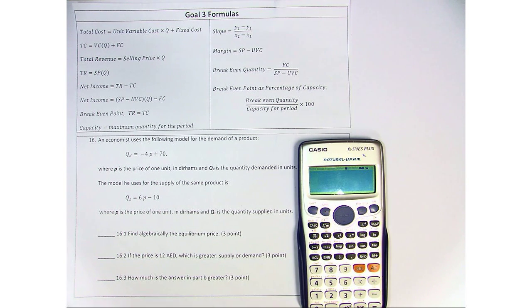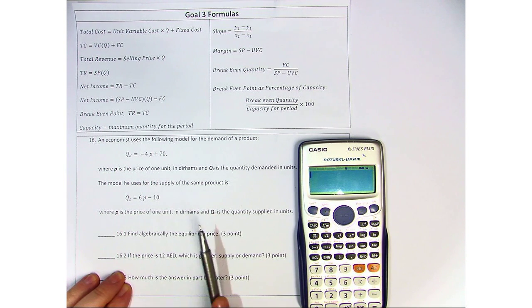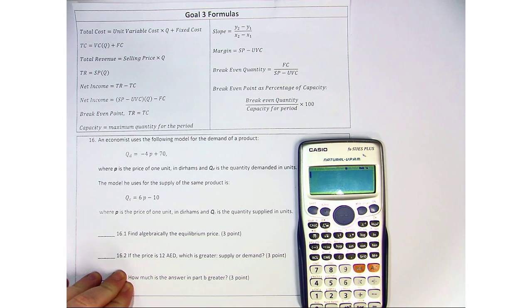And Qd is the quantity demanded in units. The model he uses for supply of the product is Qs equals 6p minus 10, where p is the price and Qs is the quantity supplied.